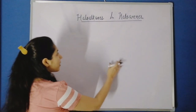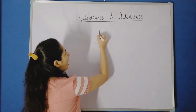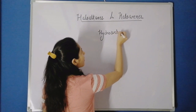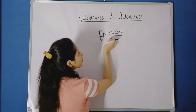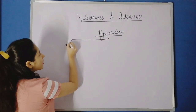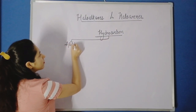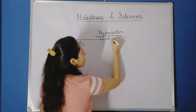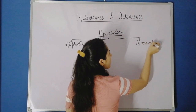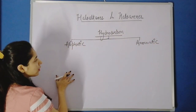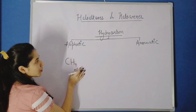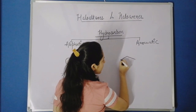First let's understand what haloalkanes and haloarenes mean. Suppose we have any hydrocarbon — and hydrocarbon means a compound of hydrogen and carbon. That hydrocarbon can either be aliphatic or it can be aromatic. For example, the simplest aliphatic hydrocarbon I'll take is CH4, and for aromatic hydrocarbon I'll take benzene.